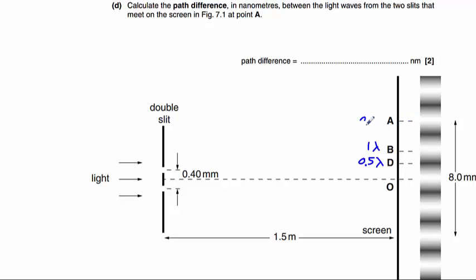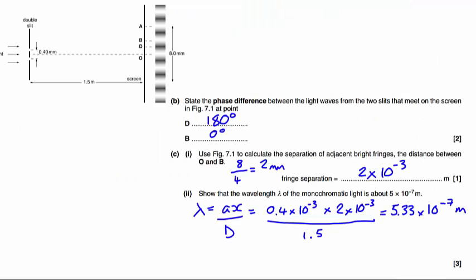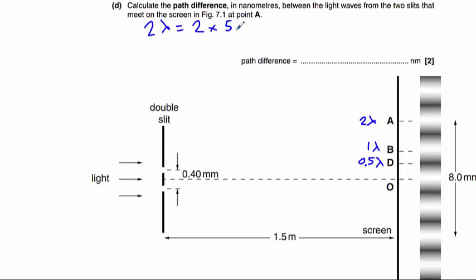will occur at a path difference of 2 wavelengths. So 2 lambda is going to be equal to 2 times our wavelength we calculated in the previous question, which was 5.33 times 10 to the minus 7 metres. Which gives us 1.07 times 10 to the minus 6 metres. In nanometres that would be 1,070 nanometres.